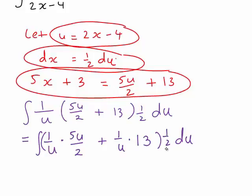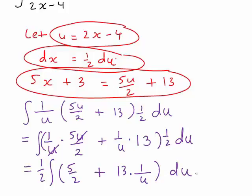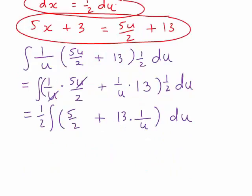Now that 1 half is just a constant, so that could be taken outside the integral sign. Then 1 divided by u times 5u divided by 2, the u's cancel there, so that just becomes 5 divided by 2. And this other expression is 13 multiplied by 1 divided by u, and we're integrating that with respect to u. This integral is now relatively straightforward to evaluate.